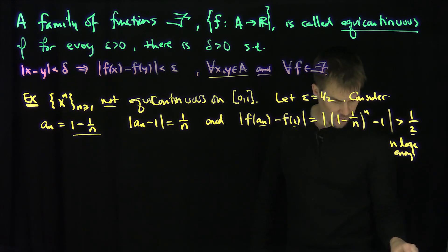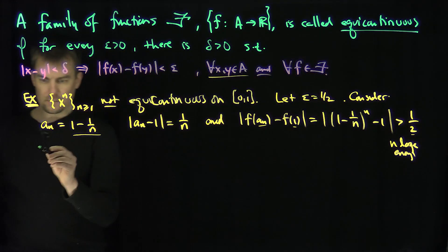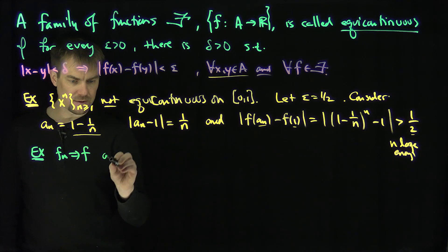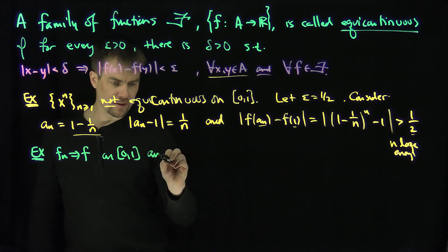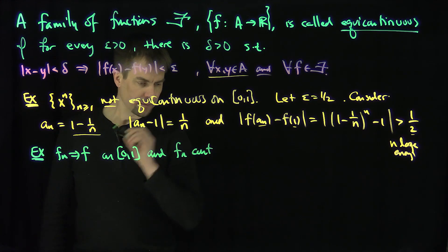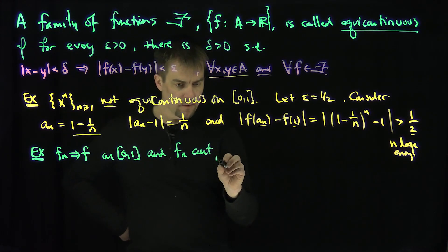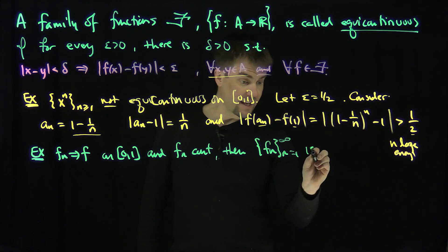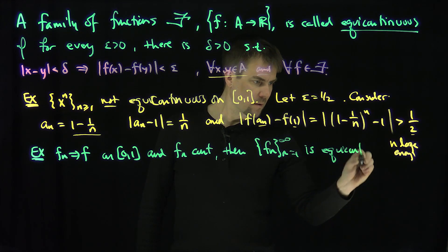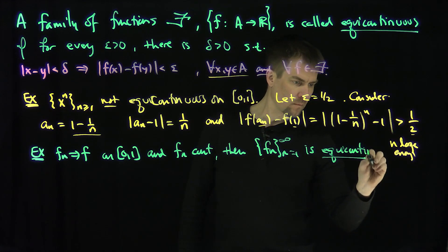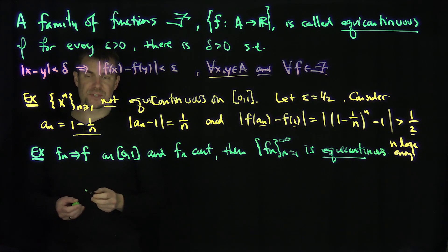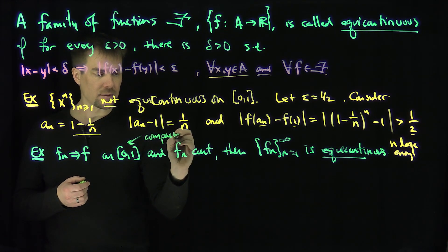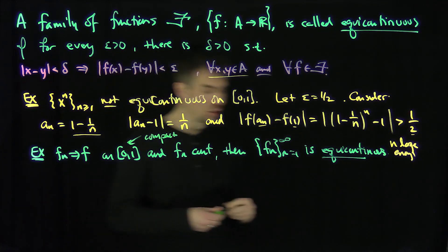Now, what is an example of an equicontinuous family? If F_n converges uniformly to F on the interval zero, one, and the F_n are continuous, then the family F_n for n from one to infinity is equicontinuous. The key feature here is that zero, one is a compact set, so these functions F_n are all uniformly continuous.